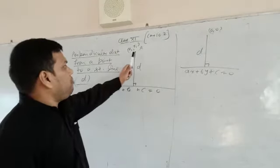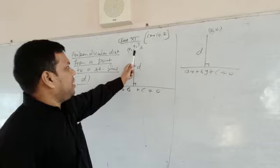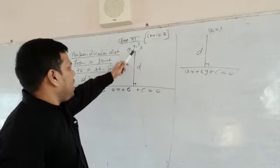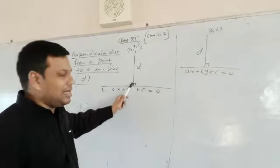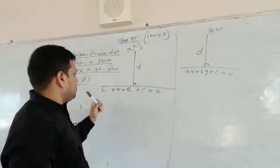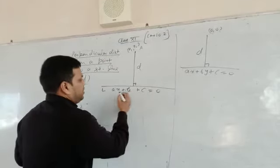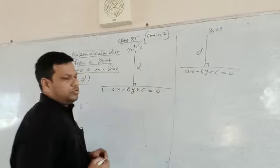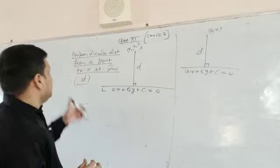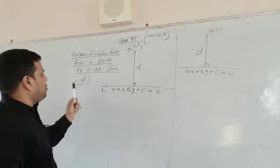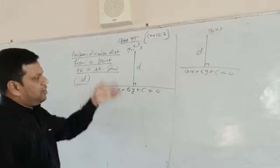That is from a point which is given x1, y1, from a point we have to find out the distance, perpendicular distance from or to the line ax plus by plus c is equal to 0. The perpendicular distance from a point to a straight line, we have to find out this distance.